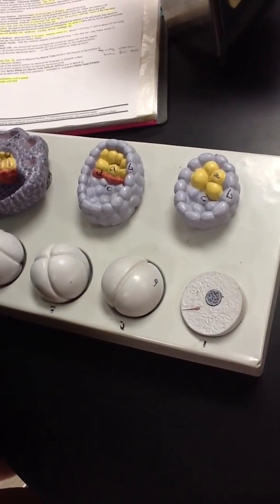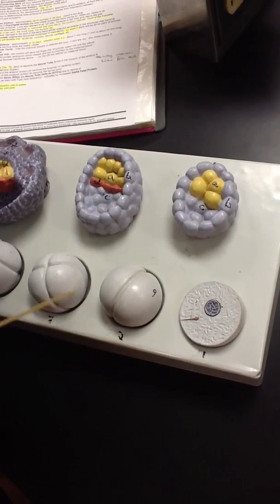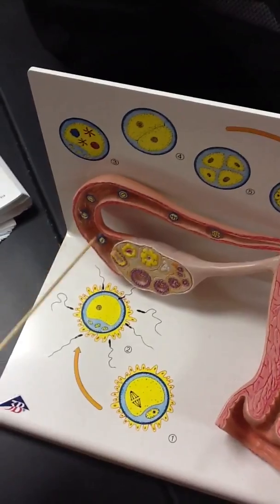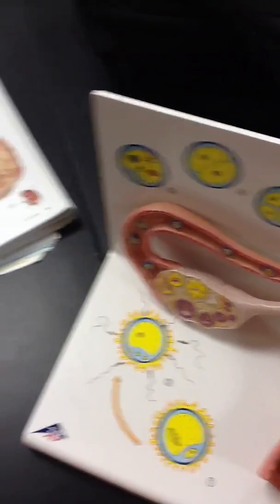The oocyte is fertilized in the distal fallopian tube and is at metaphase II of meiosis. And so we can see that over on here, the fallopian tube's right here, so the distal would be down here. And then the oocyte comes out into the fallopian tube.